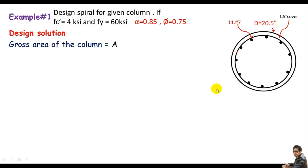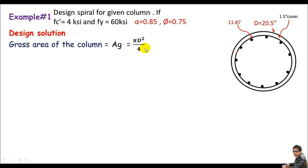Let me calculate the gross cross-sectional area of the given column. Ag = π·D²/4, since this is a circle. The diameter is 25 inches, so: Ag = π × (25)² / 4 = 330 square inches.